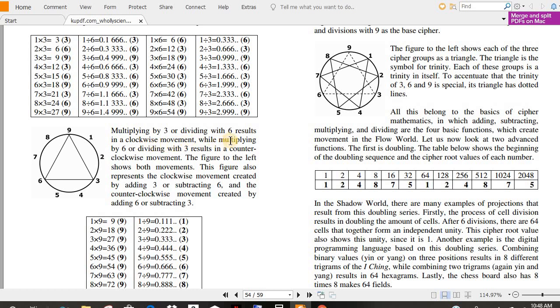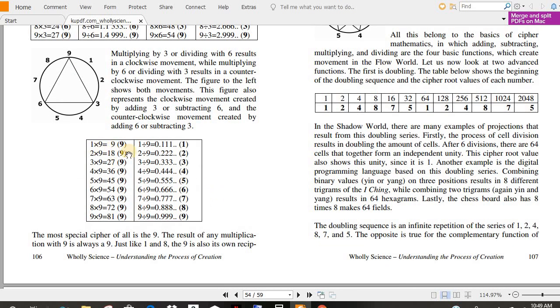Multiplying by three or dividing with six results in a clockwise movement, while multiplying by six or dividing with three results in a counterclockwise movement. That's just fascinating. The figure to the left shows both movements. This figure also represents the clockwise movement created by adding three or subtracting six, and the counterclockwise movement created by adding six or subtracting three. If this gets confusing, you can always pause and write it out on paper. That's what I would do. And once you start writing these graphs out or drawing these, I call this toroidal or vortex math, then you really get an idea of what it is and how amazing it really is.